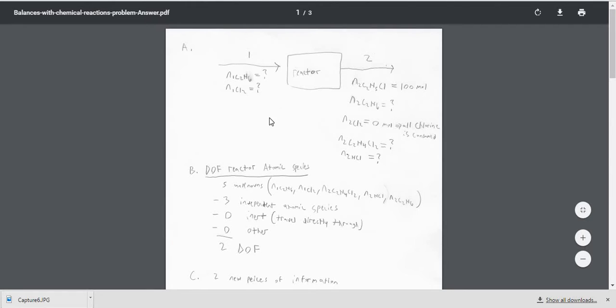The second part of the question asks to do a degree of freedom on this flow sheet. So if we look here, we have five unknowns, which are all the question marks here. And then we would have three independent atomic species because we have chlorine, carbon, and hydrogen. So those are the three atomic species we could do it on.